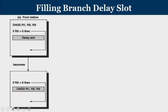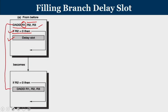Let us see an illustrative example of how to fill the branch delay slot. Consider the branch instruction: if R2 equals 0, then do something. There is a delay slot when R2 equals 0. Think of the instruction: DADD R1, R2, R3 — R2 plus R3 is stored into R1. Now I check whether R2 equals 0. This branch instruction is not dependent on the previous instruction. So I take that instruction and place it after the branch statement: if R2 equals 0, then jump, and DADD R1, R2, R3 fills the delay slot. This is how we identify an instruction from before the branch and put it in the branch delay slot.